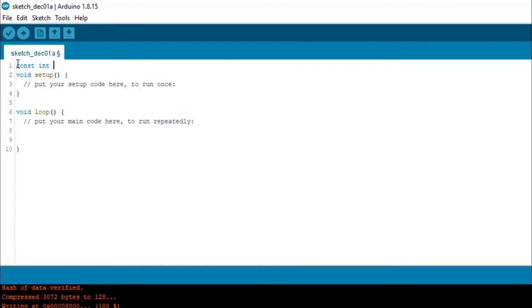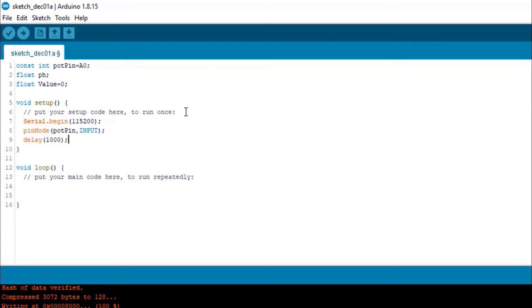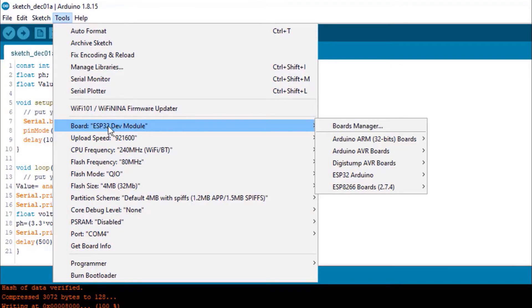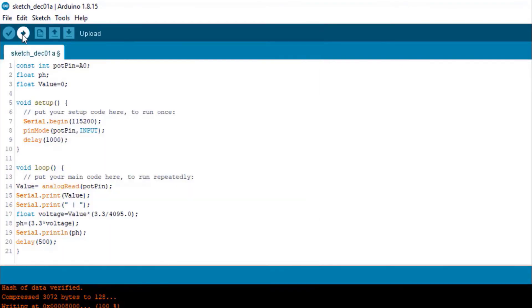Now let's move to the basic code. We will only be measuring the analog-to-digital converter value and then converting it into a pH value. So this is a simple code according to the datasheet. Now select the ESP32 board from the list, then select the port as well, and then you can upload the code.